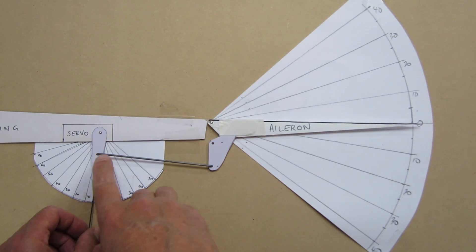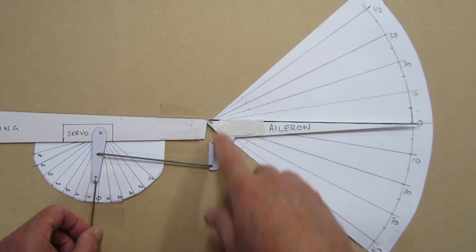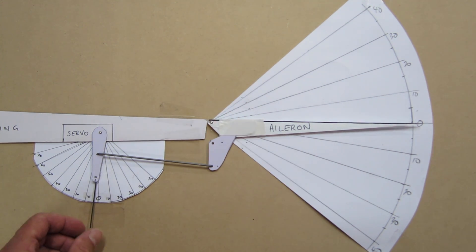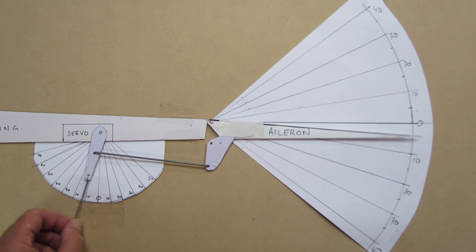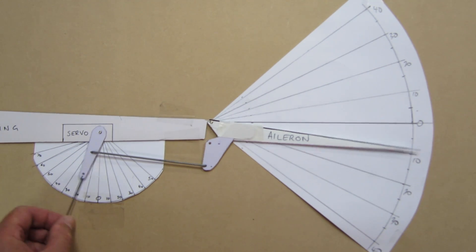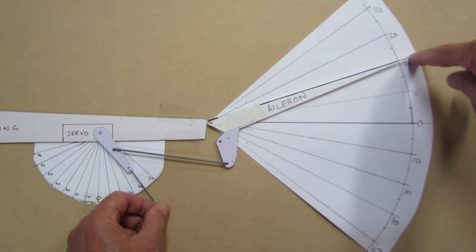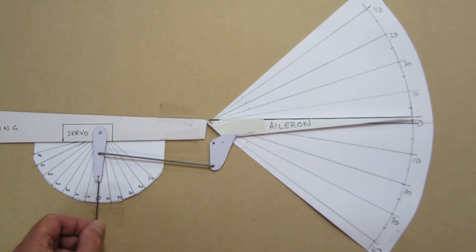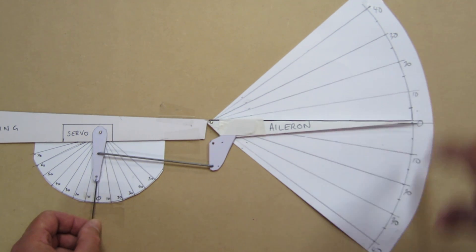So now we have push rod on the servo 25mm out. The push rod on the aileron is 50mm out. Let's see what happens now. We'll go out to 40, and the aileron only goes down to 20 degrees. Up 40, and 20 degrees up as well. So you can see that has reduced the throws on the aileron by moving the push rod further in on the servo arm.